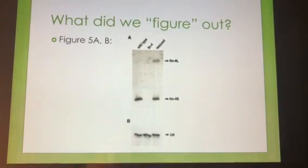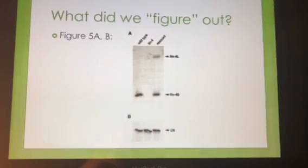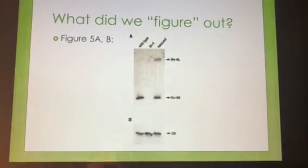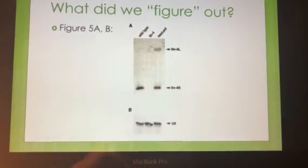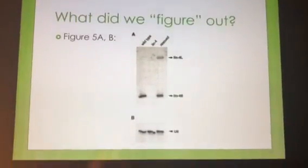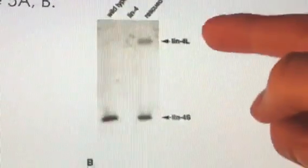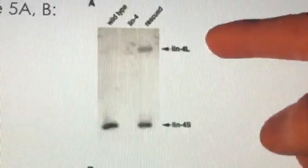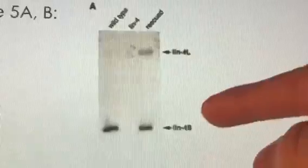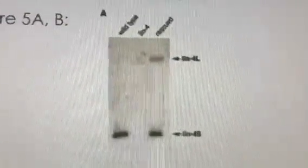So what did we figure out? Figure 5A, since we know that Figure 5B is just a control, Figure 5A shows that the LIN-4 gene in wild-type worms produces two distinct RNA products. These two products are LIN-4L and LIN-4S. LIN-4L, where the L stands for large, and LIN-4S, where the S stands for small. This is because LIN-4L is larger than LIN-4S. These were the two distinct RNA products that came from the LIN-4 gene.